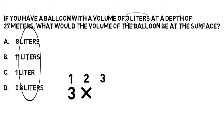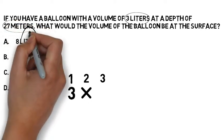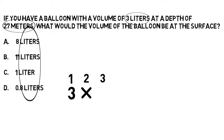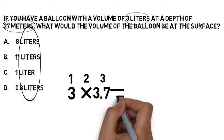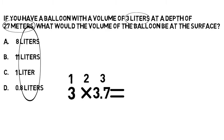Now we need to find the depth from the question. The depth is 27 meters. Using our depth pressure chart, we can calculate that's 3.7 atmospheres. And we've got three times 3.7 as our calculation. Three times 3.7 is 11.1.